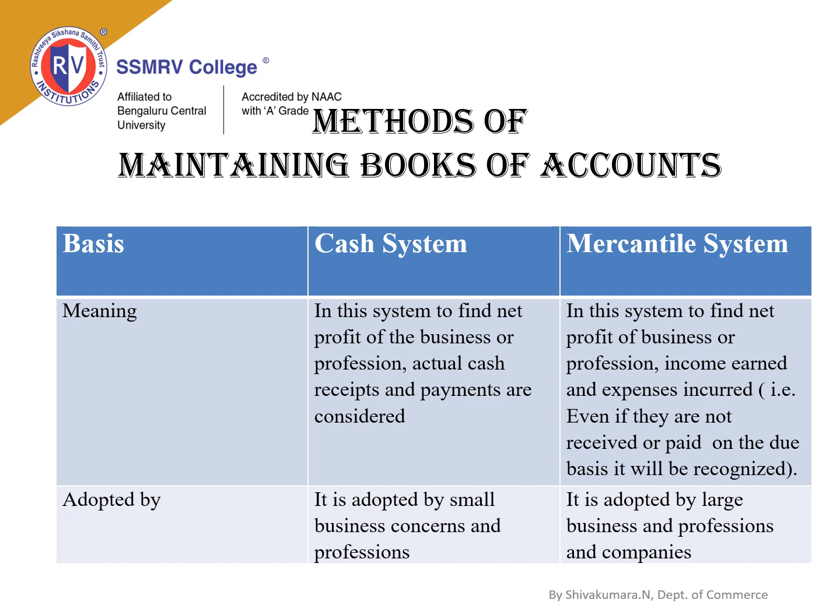An important topic before solving problems on assessment of a company is the method of maintaining books of accounts. There are two important methods: the cash system and the mercantile system. In the cash system, net profit is found by considering actual cash receipts and payments. In the mercantile system, income earned and expenses incurred are recognized on a due basis, even if not yet received or paid. The cash system is adopted by small business concerns and professions, while the mercantile system is adopted by large businesses and companies.